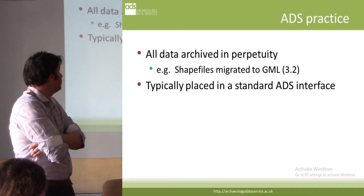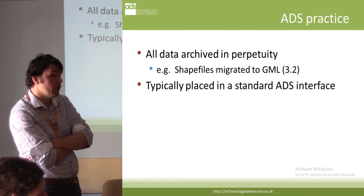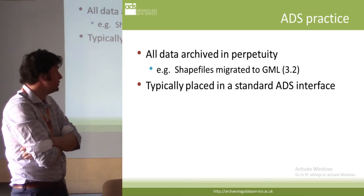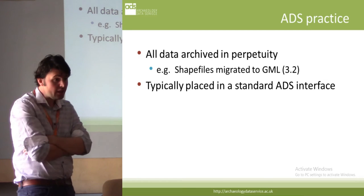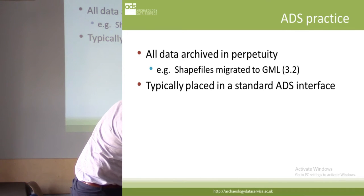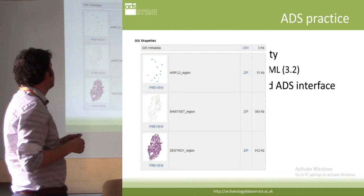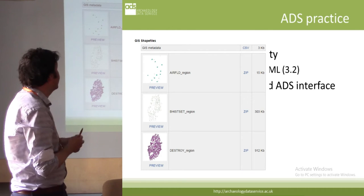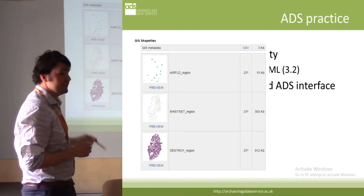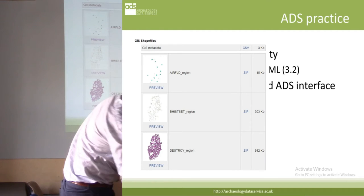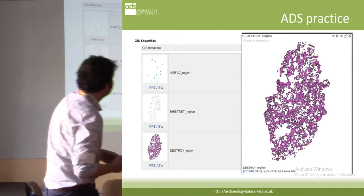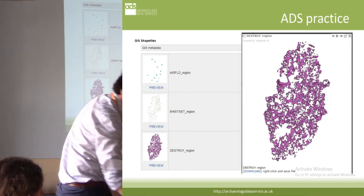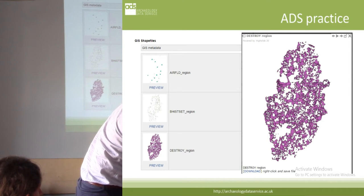First and foremost, all data is archived in perpetuity in non-proprietary formats. For example, we move all our Esri shapefiles to GML 3.2, which is now an ISO standard. Normally they're placed in what we call a standard ADS interface, where you find the archive you're interested in, and we bundle up and disseminate shapefiles — it's a simple format. You can actually download the files to your desktop, and in certain cases you can see a brief preview of what the file may look like. That's what we call our belts-and-braces approach.